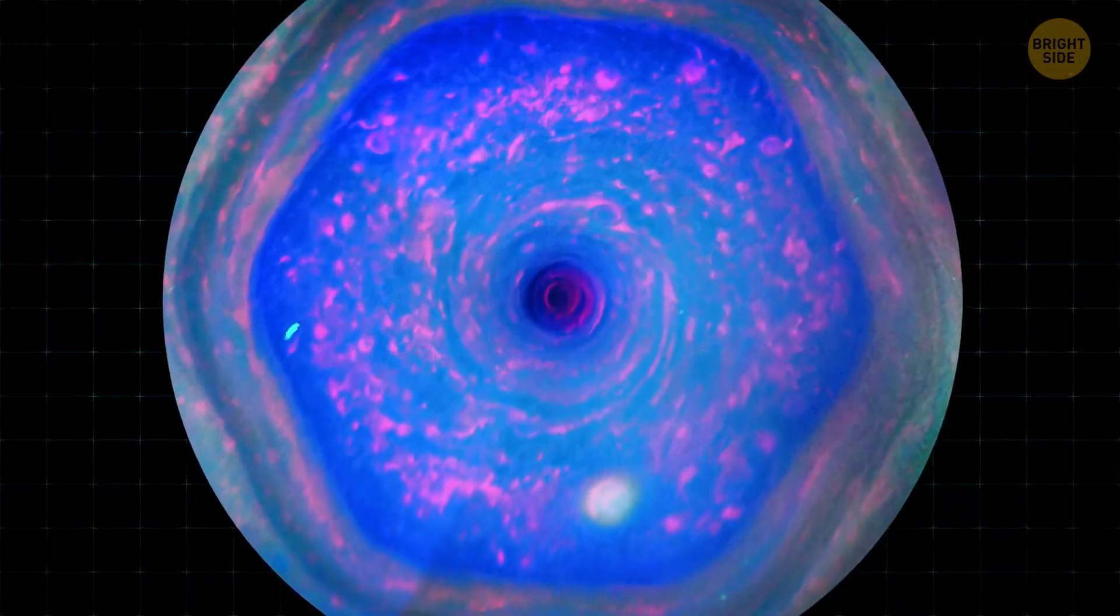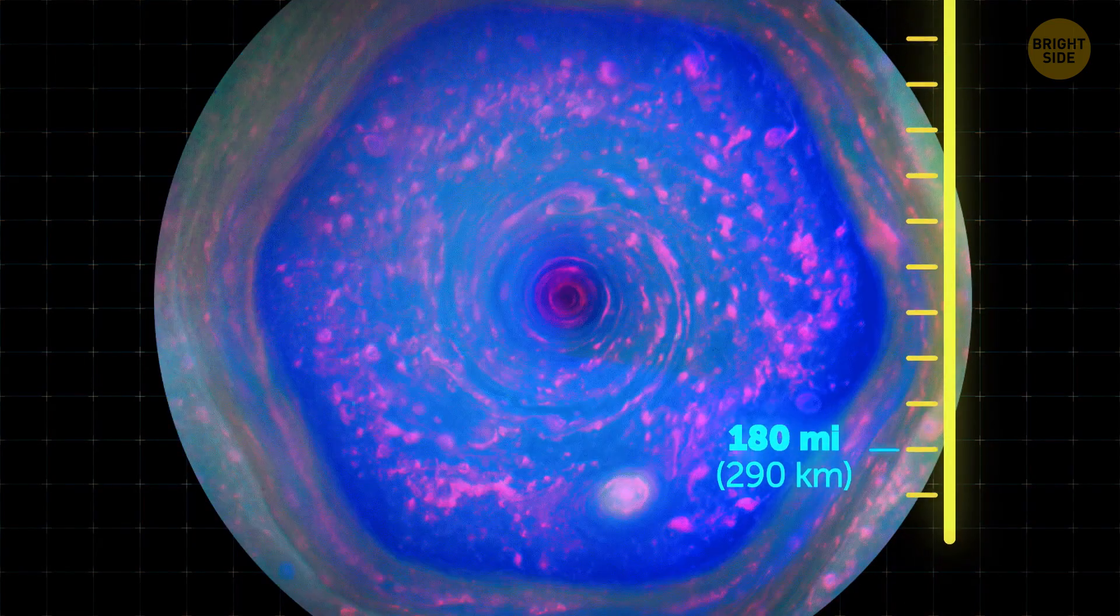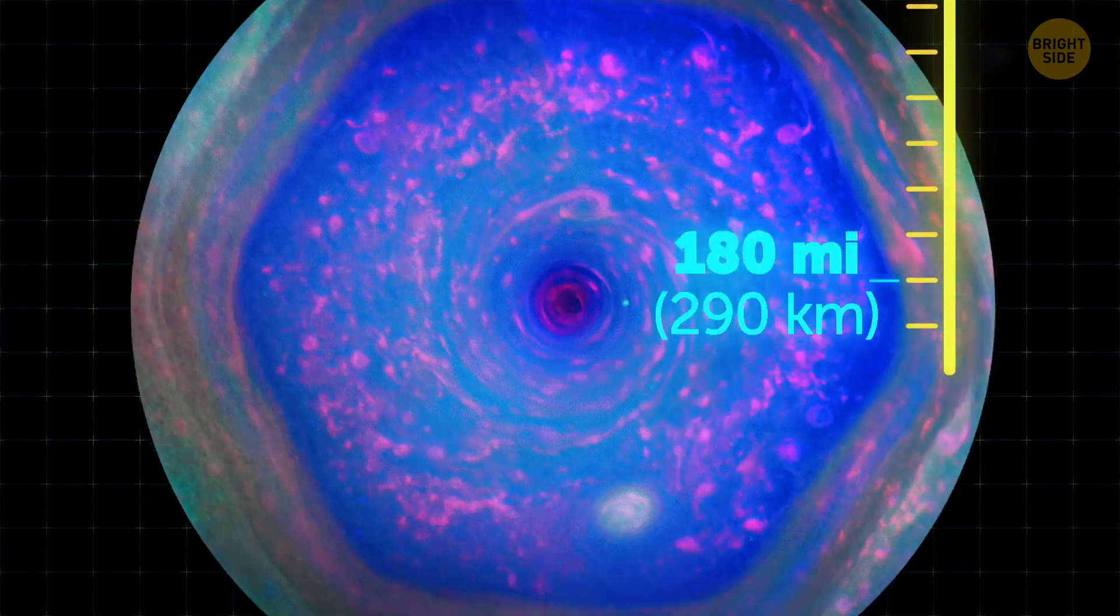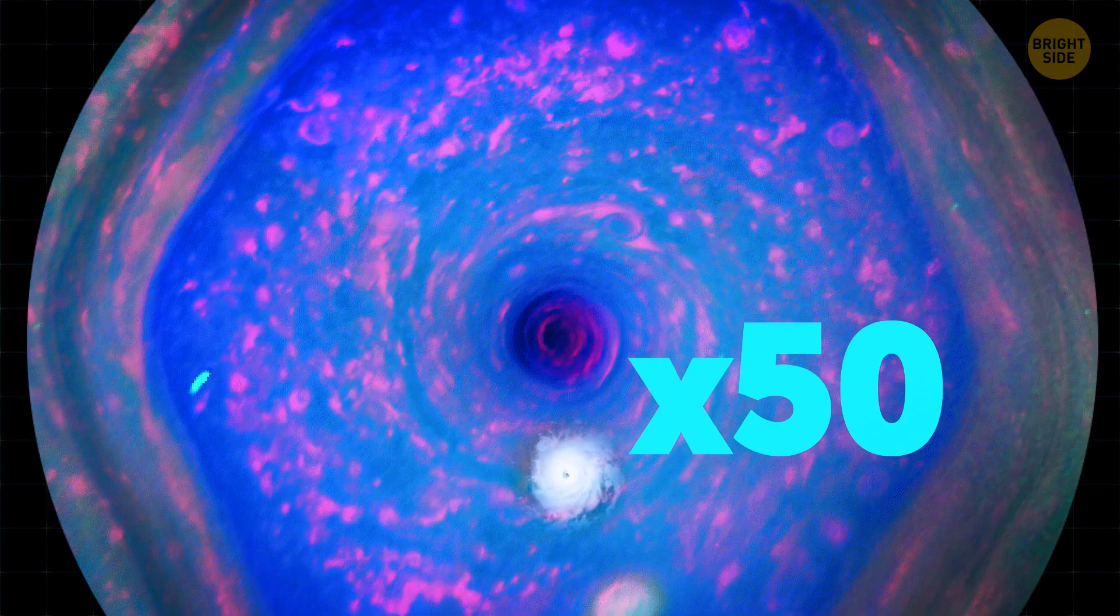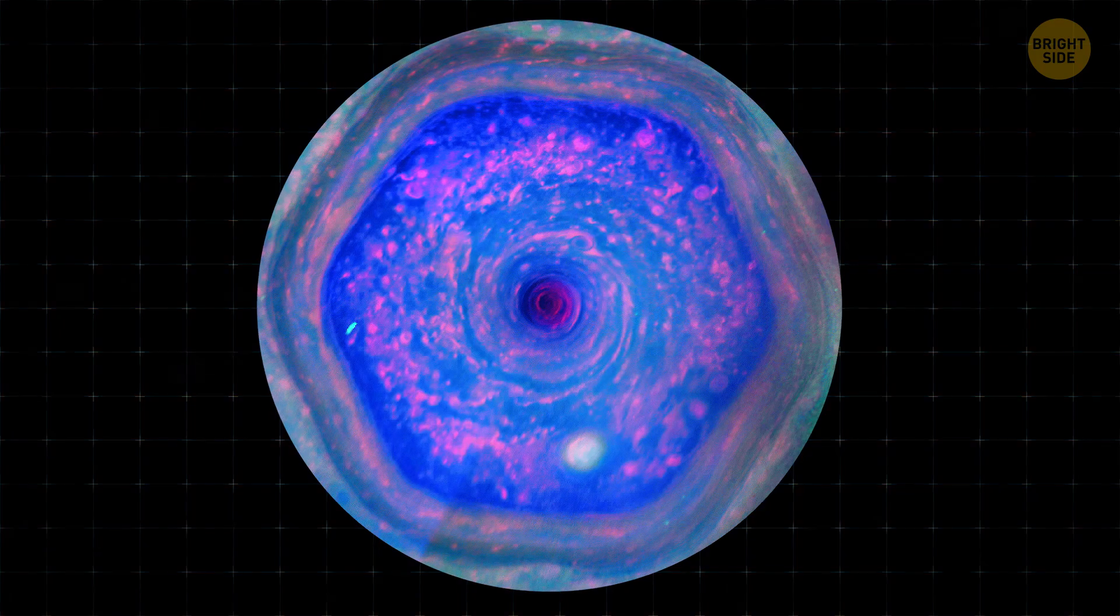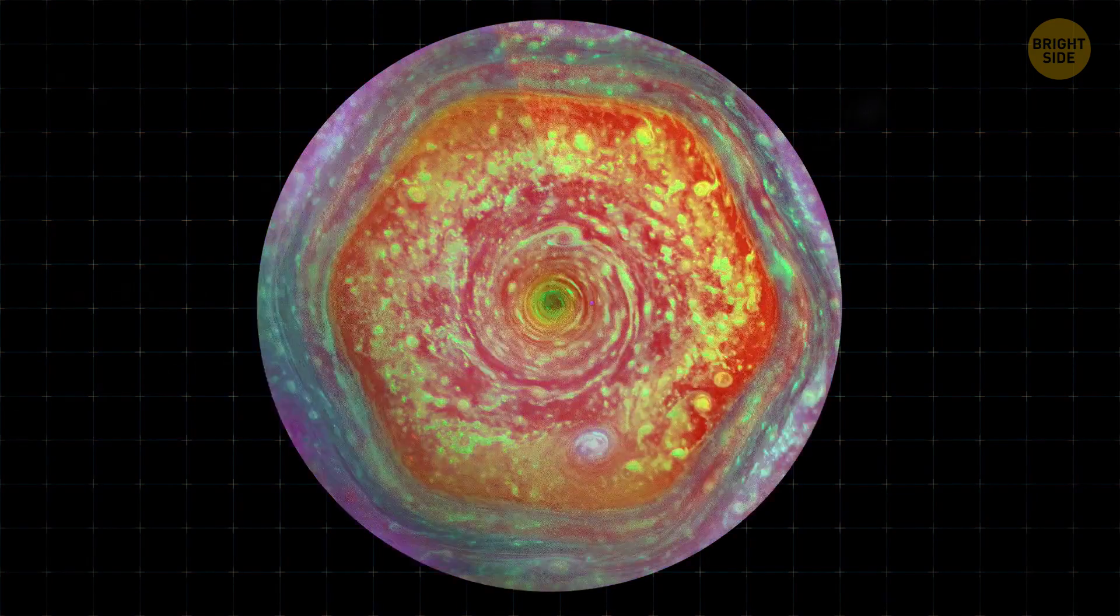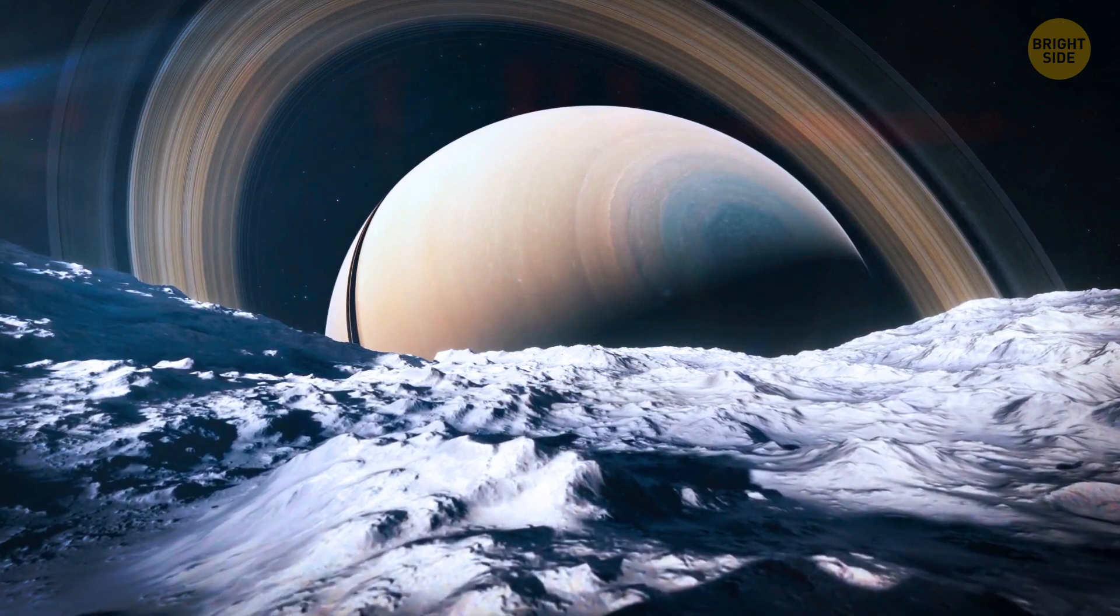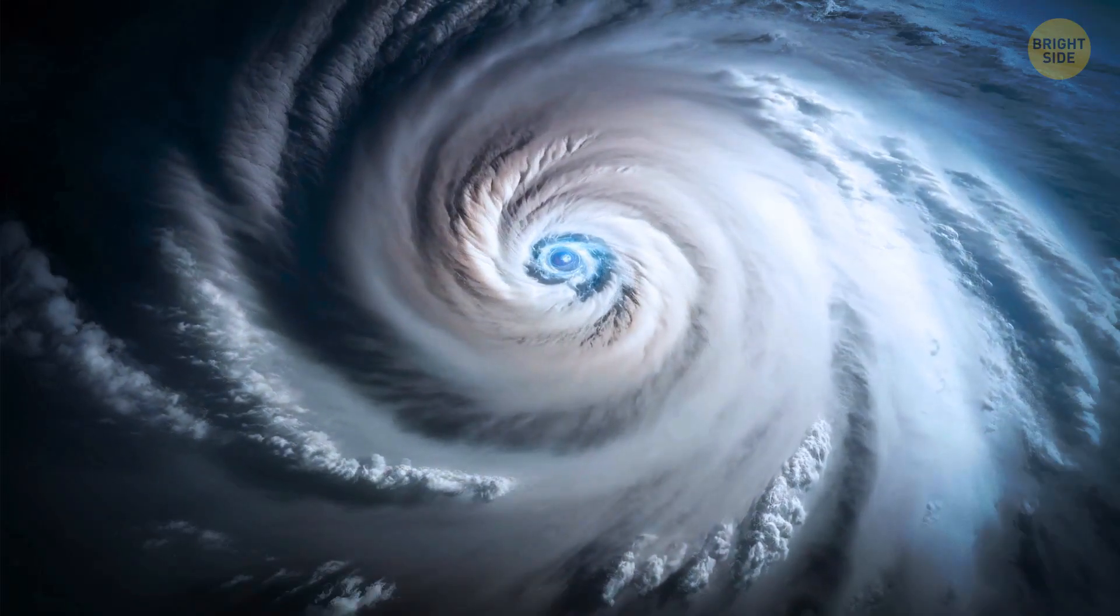It turned out to be colossal in size. Its estimated depth is around 180 miles. And the eye of the storm is 50 times as large as the typical storm on Earth. The storm is also changing its color from blue to gold.